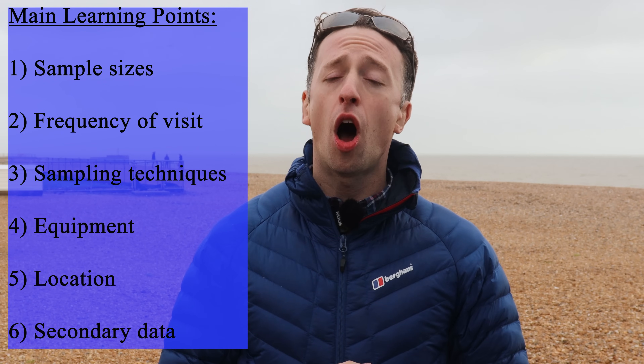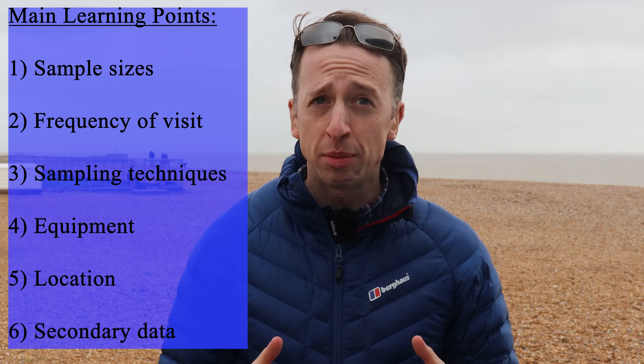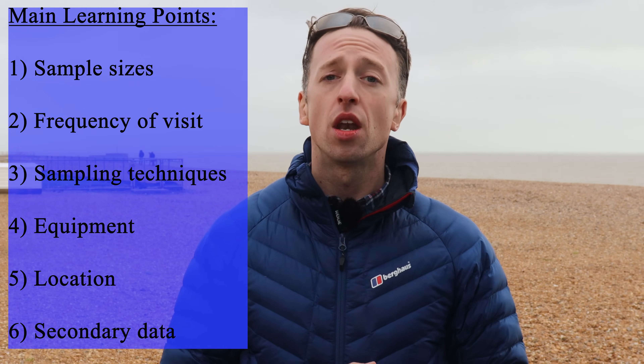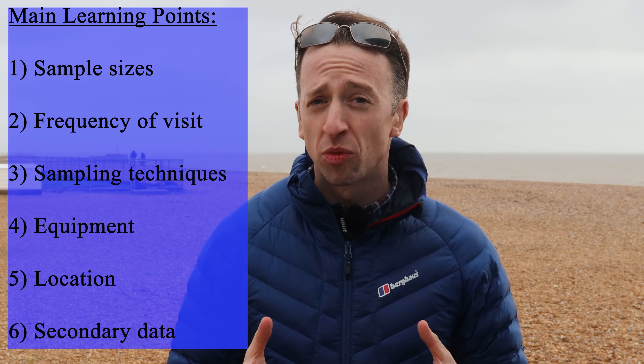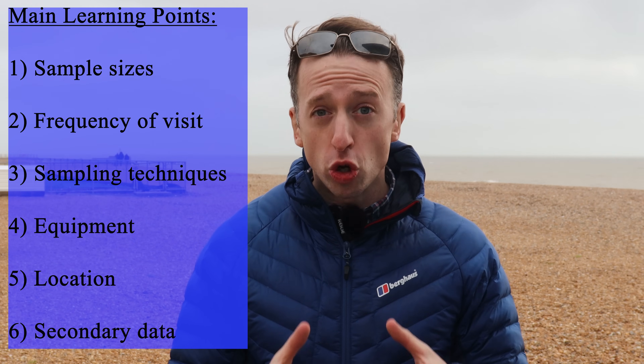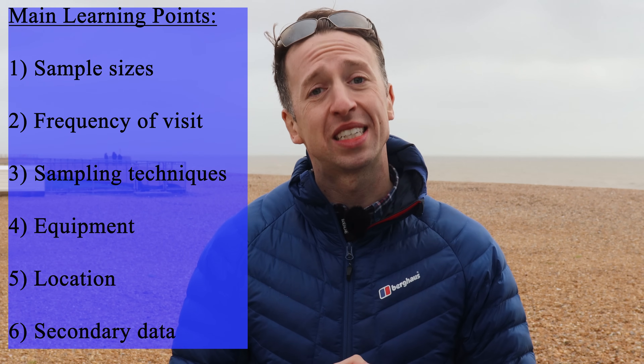The evaluation section is an opportunity for you to reflect on your data collection methods and how reliable you believe your data, your results and your conclusion to be. Things to consider include: number one, are my sampling sizes big enough? Number two, did I visit the site of study enough times? Number three, were my sampling techniques appropriate? Number four, did I use scientific equipment or was it a little bit too basic? Number five, was the location I visited suitable for my investigation? And number six, how reliable was my secondary data?